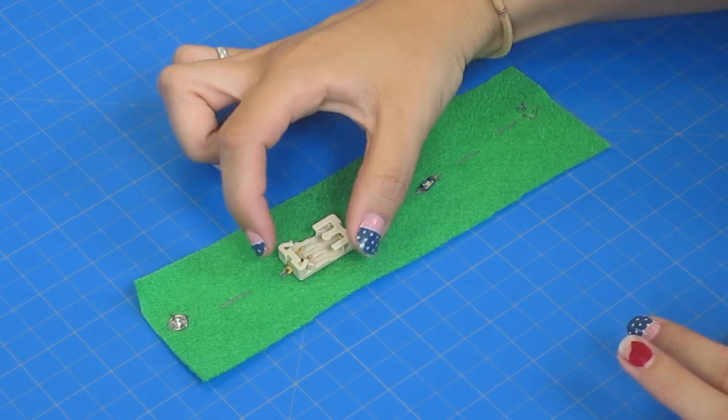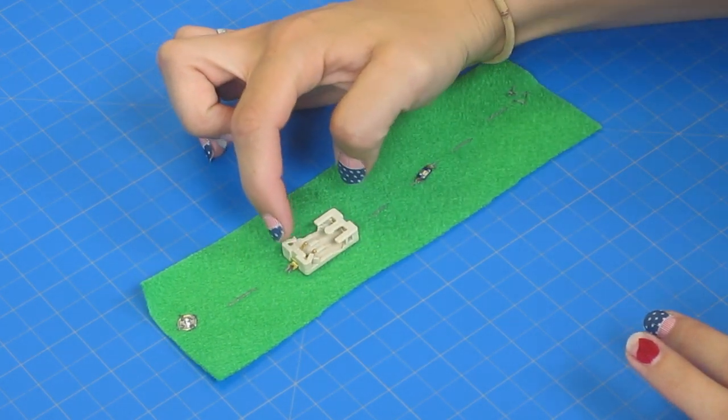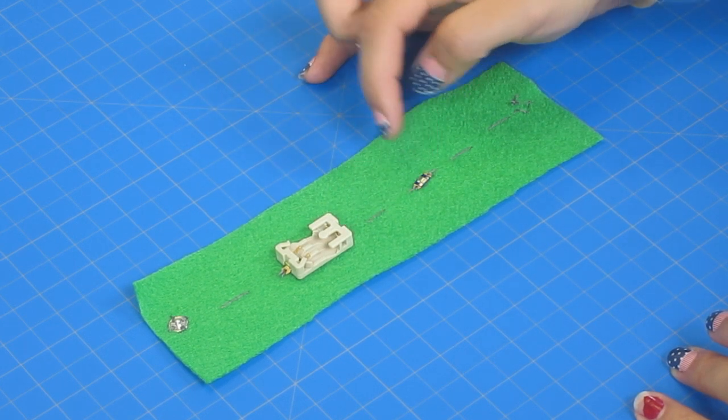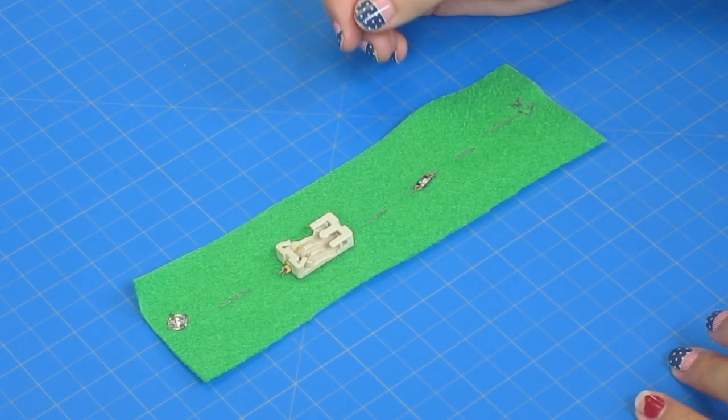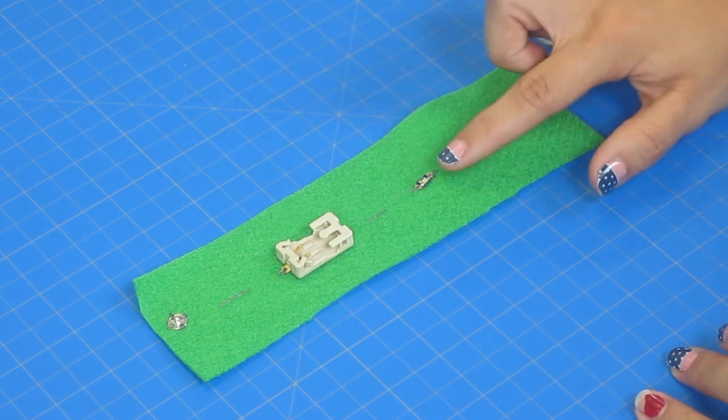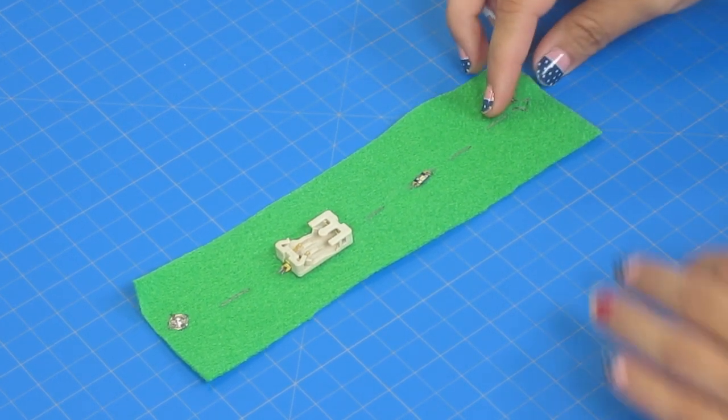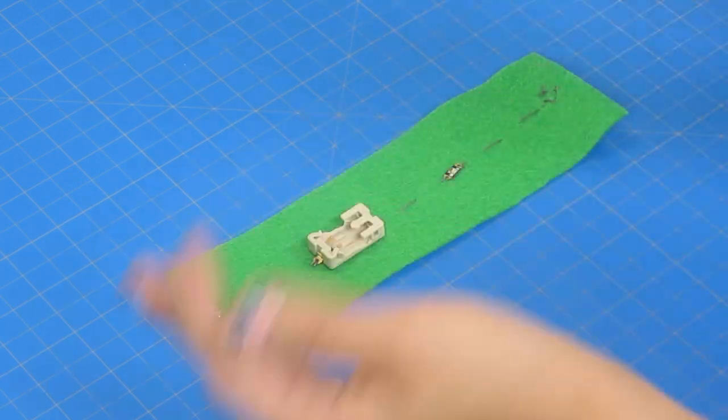Start the negative side of your outie snap to the negative side of your battery holder and then end your thread. Start with the positive side to the positive side of your LED and end that thread, and then from the negative side connect it to your innie snap which is on the back side of the bracelet.